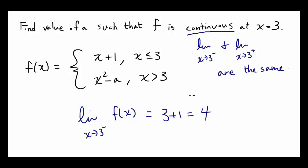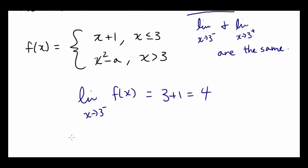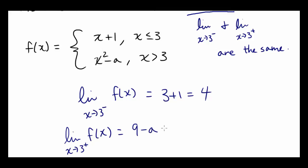So we want the limit from the right to also be 4. The limit as x approaches 3 from the right of f of x — if we plug 3 into x for x squared minus a — is going to be 9 minus a. We want this to equal 4, and solving for a, we get a is equal to 5.